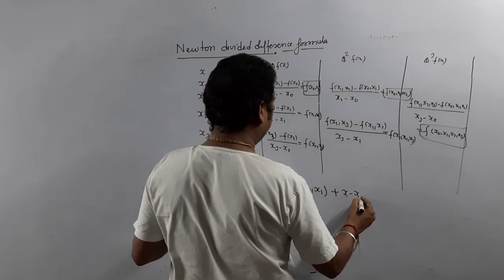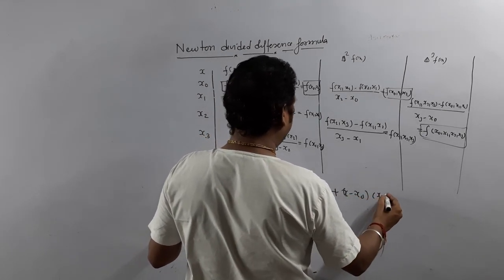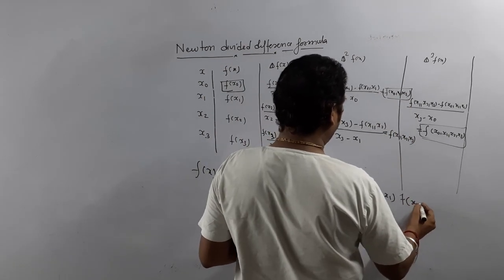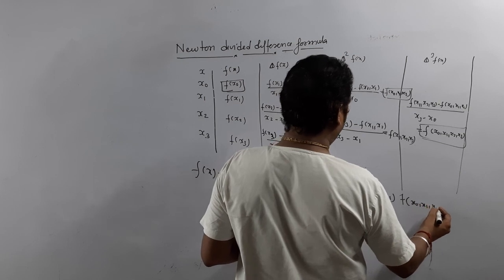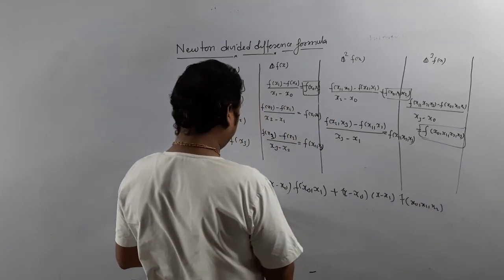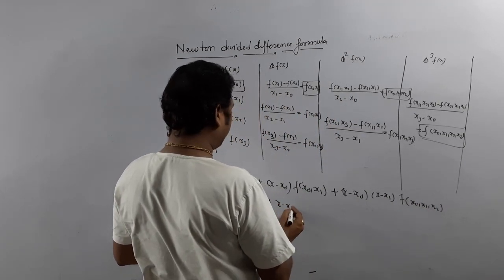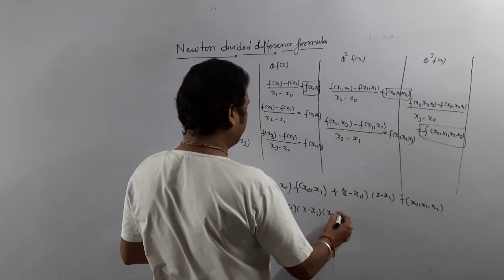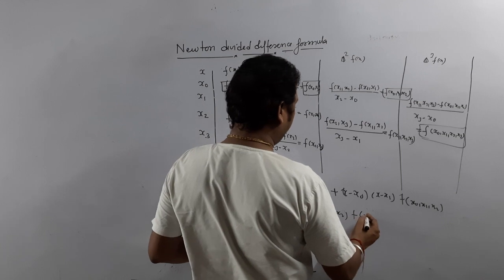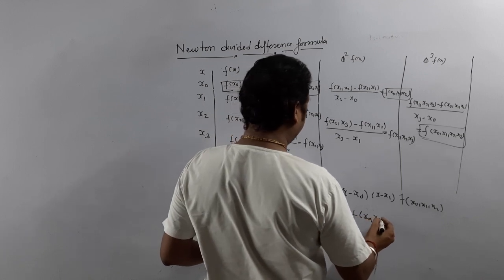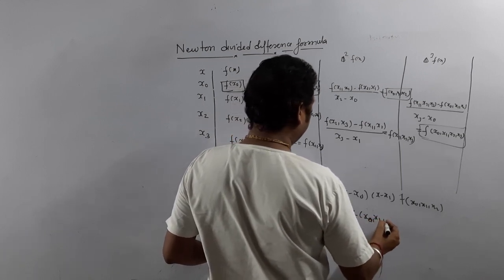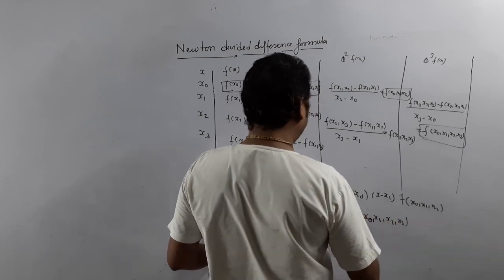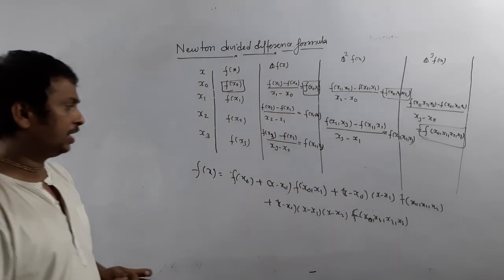The full Newton's divided difference formula is: f(x) = f(x0) + (x − x0)·f[x0, x1] + (x − x0)(x − x1)·f[x0, x1, x2] + (x − x0)(x − x1)(x − x2)·f[x0, x1, x2, x3] + ... In this way you can write Newton's divided difference formula. Now you just put in the values. Once you have found the table, it is very easy to calculate whatever they ask.